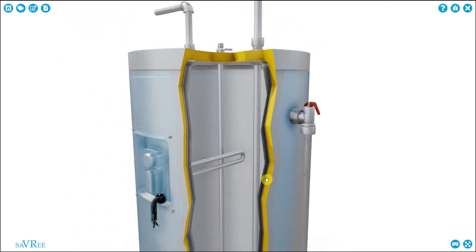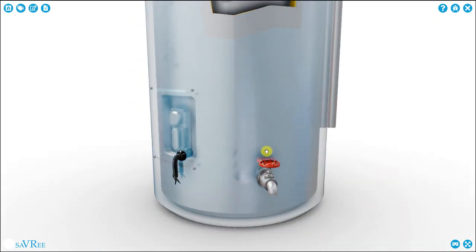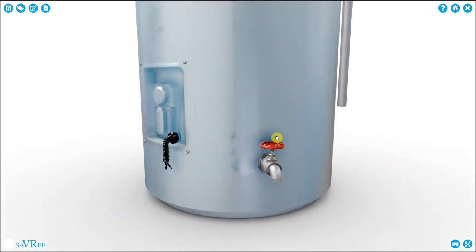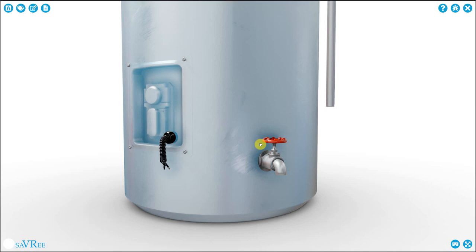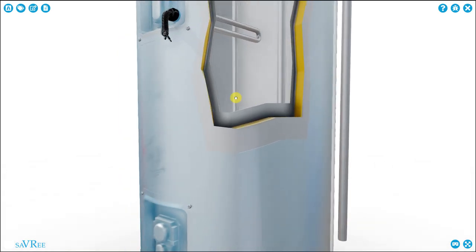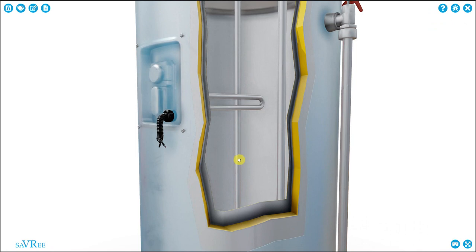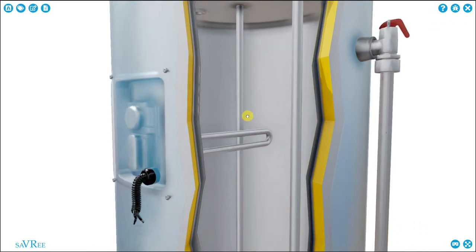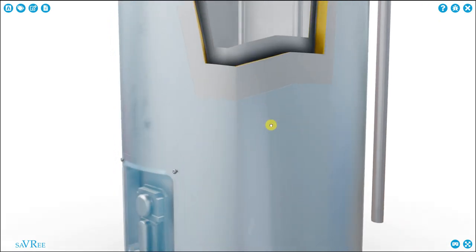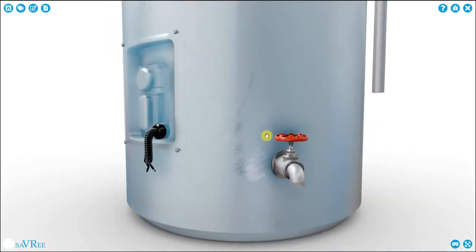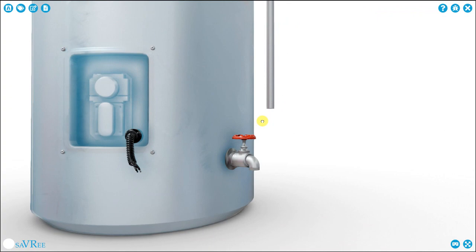Periodically, we can open up the drain valve to drain out any mineral deposits, any bits of scale, any bits of rust that might have accumulated in the bottom of the tank. And when we open up the drain, we might also get bits of the sacrificial anode being drained as well. When the anode is quite corroded, little bits of it break off. And these bits will gather at the base of the tank and we can drain them out using the drain valve.